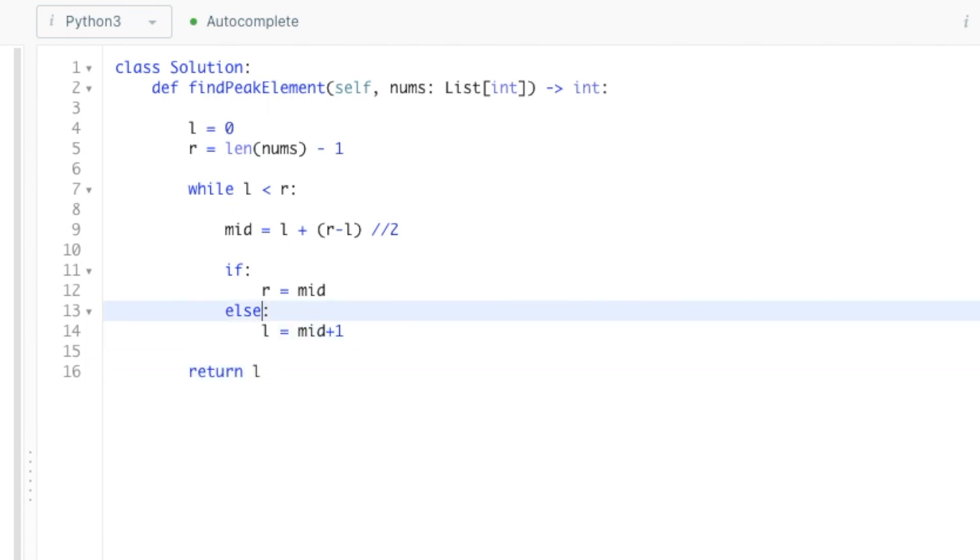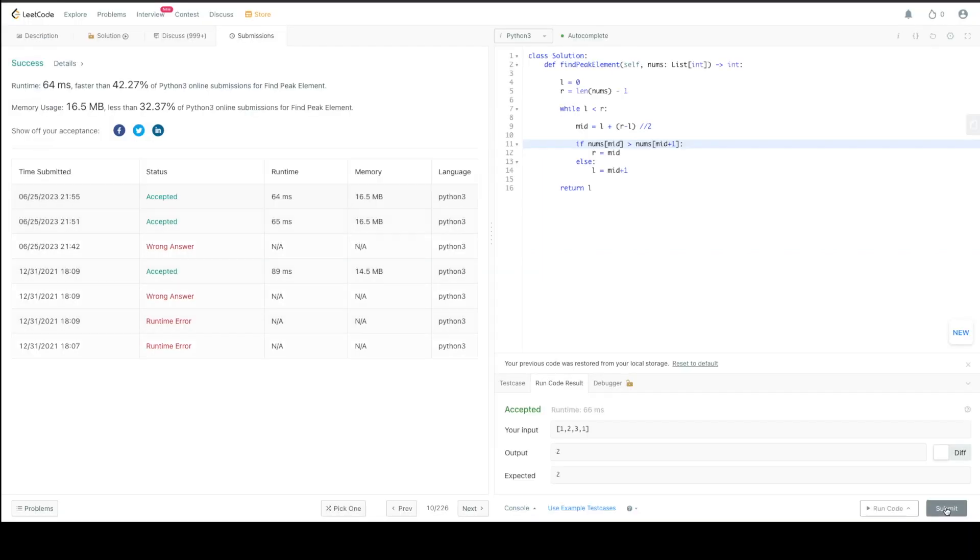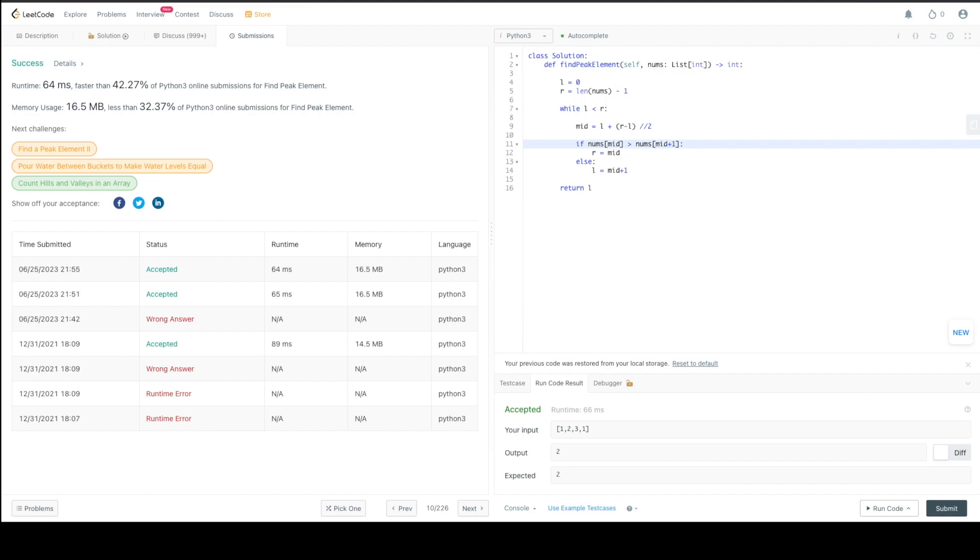Now for part two, since we're returning a peak, we just need to make sure we return left. Now we need to make sure our if-else statements check if midpoint is at or left of a peak. So we can use the condition we figured out earlier: array mid is greater than array mid plus one. Okay, so let's test it out. And awesome, it works.